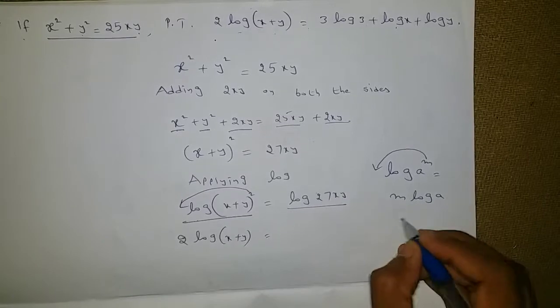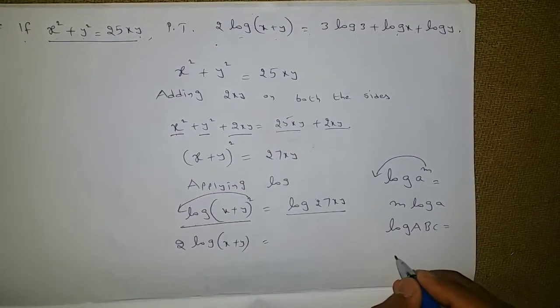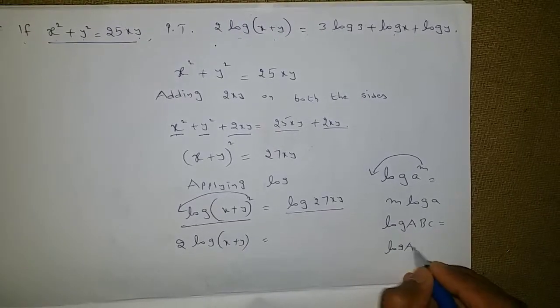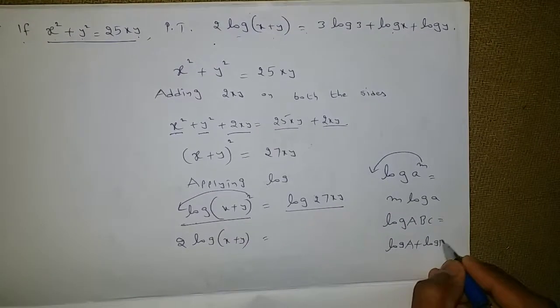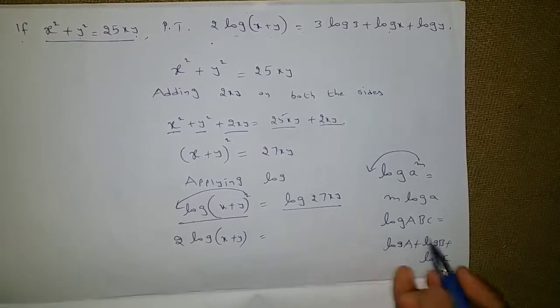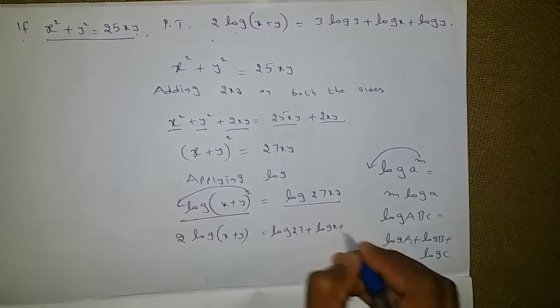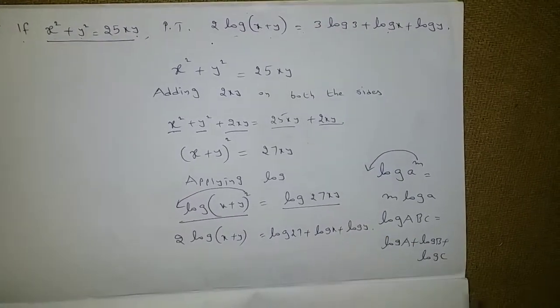The RHS is in the form of log(abc). Log(abc) can be written as log a + log b + log c. So log(27xy) can be written as log 27 + log x + log y.